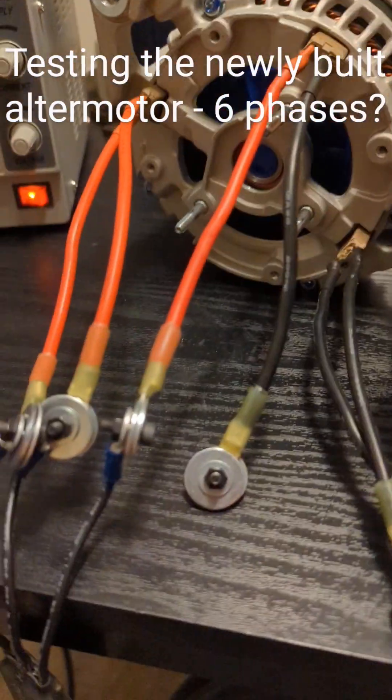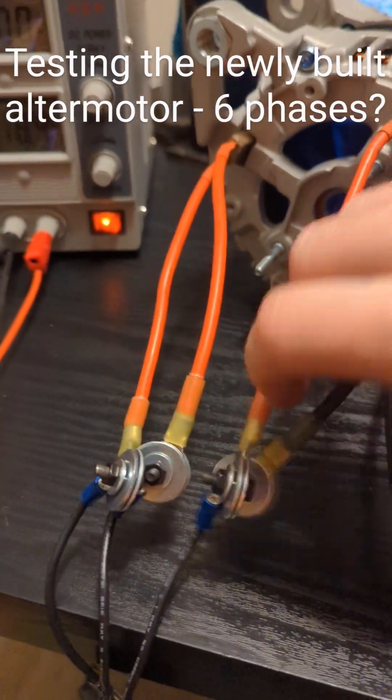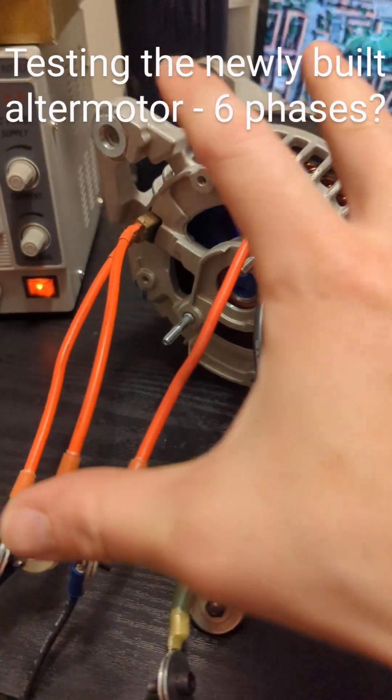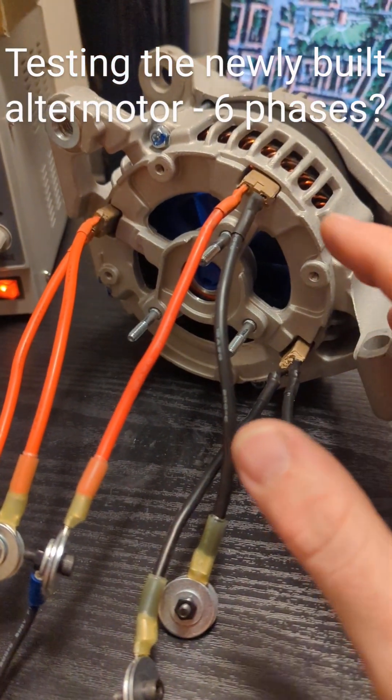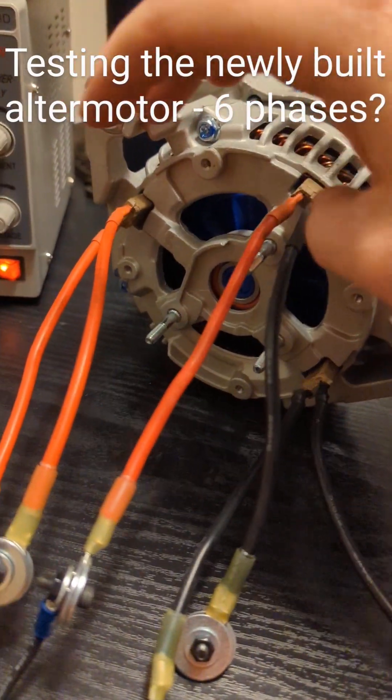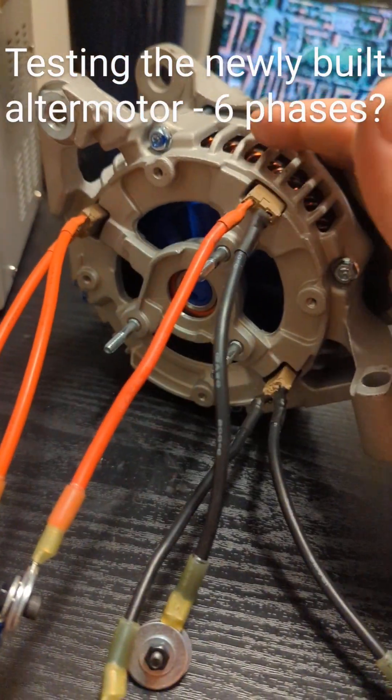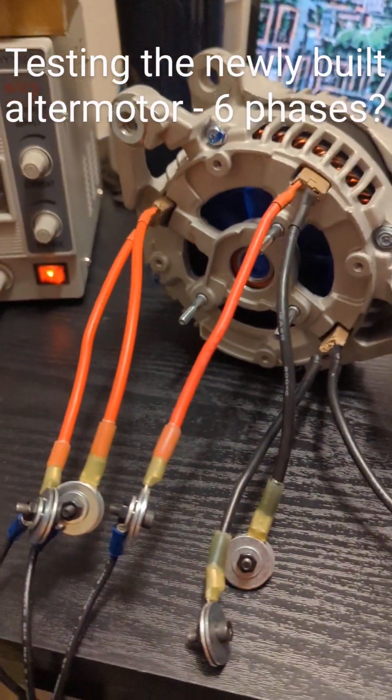But my thinking is I can probably pair these up, one black, one red, all the way across once I figure out which ones are slightly out of phase with each other. And I'll pretty much be able to make three stronger, slightly overlapping phases. Maybe it'll work. Maybe it won't. We'll find out.